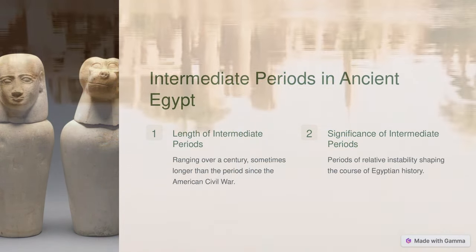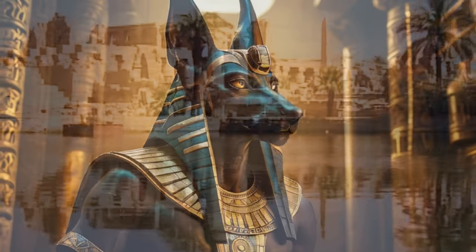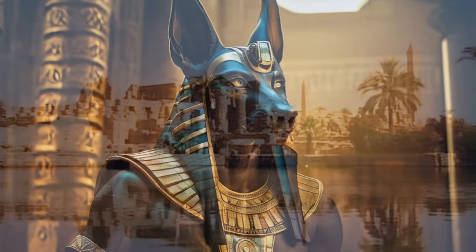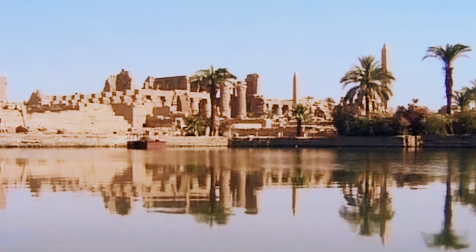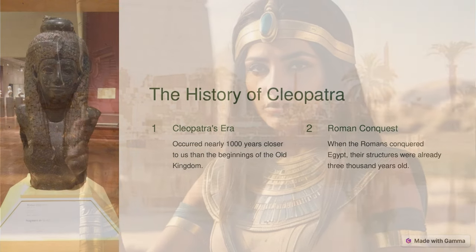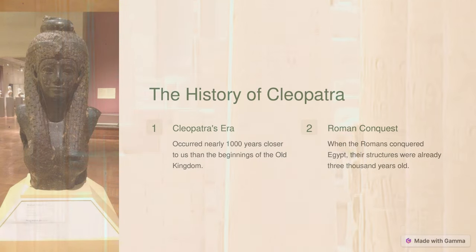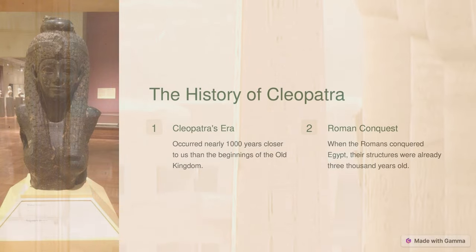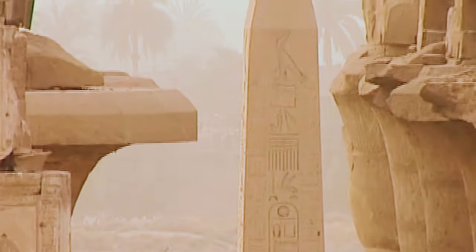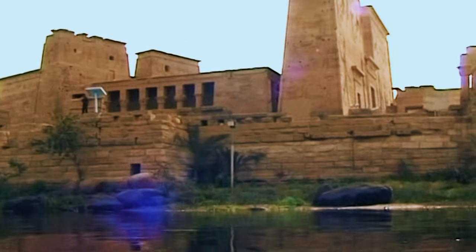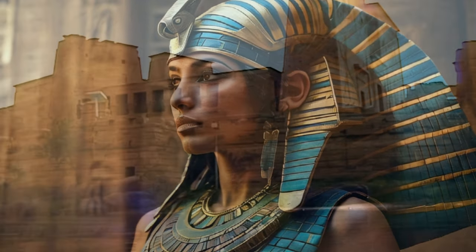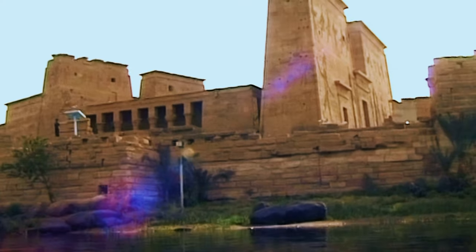Additionally, the era from 1000 BC to 332 BC, marked by significant invasions and transformations, will be distilled for clarity, paralleling the length of the medieval period in modern times. Furthermore, the story of Cleopatra, the famed female pharaoh, and her romantic entanglements with Julius Caesar and later Marcus Antonius, occurred nearly 1000 years closer to us than the beginnings of Egypt's Old Kingdom. When the Romans conquered Egypt, they stood amidst structures already 3000 years old. This grand civilization concluded in 641 AD, fading into oblivion until its rediscovery in the 18th century.